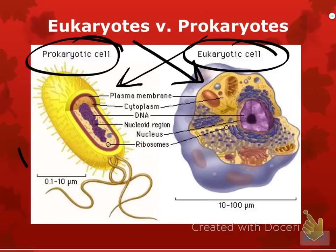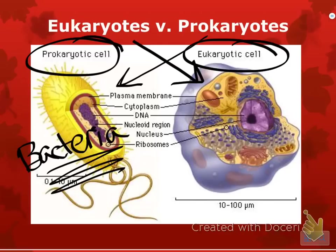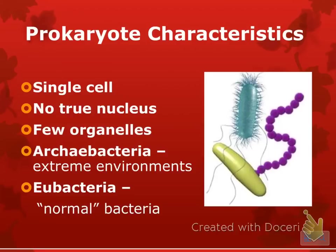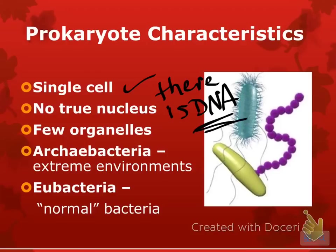Bacteria is a prokaryotic cell, so it's really important that you know this. Some characteristics about prokaryotes: first of all, single cell. There's no true nucleus, but really important — there is DNA. All cells have DNA; they just don't necessarily have a nucleus. There are a few organelles, there are some ribosomes, but that's pretty much it.